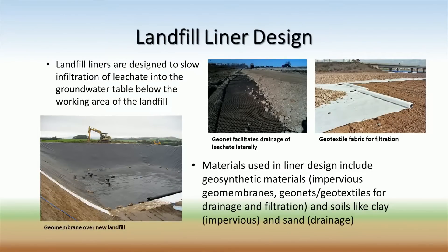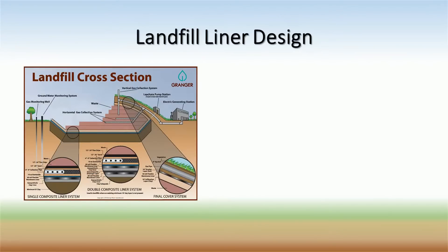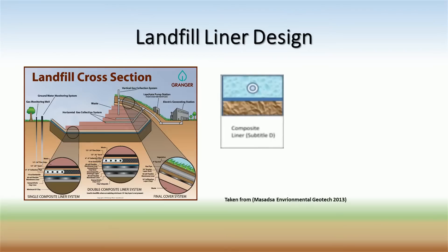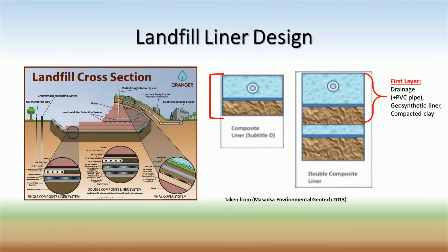Landfill liners are designed to stop infiltration of leachate into the groundwater table. The liner must also include a leachate drainage system to remove leachate from the bottom of the landfill. By using impervious clay soils or geosynthetic materials, the rate of water infiltration into the native soil below the landfill is slowed significantly. Designs for landfill liners come in two basic configurations: single layer or double layer liners. Single layer liners have a single drainage layer underlain by a composite geosynthetic liner and a compacted clay liner. Perforated PVC piping is situated in the drainage layer at the lowest point in the landfill. Leachate drains vertically through the above waste layers before reaching the drainage layer, then is forced through the PVC piping and removed using a sump pump located at the absolute lowest point in the landfill.